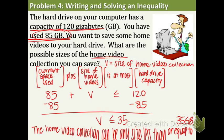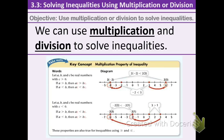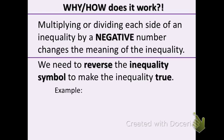In section 3.3, we're going to use multiplication and division to solve inequalities — those are your first two blanks on this note sheet. Yesterday we used addition and subtraction; today we use the next two operations. The same rule applies: if we multiply one number to one side, you do the exact same thing to the other. However, it's a little different because when you multiply or divide each side by a negative number, you're changing the meaning of the inequality. To compensate, we need to reverse the inequality symbol to make the inequality true.